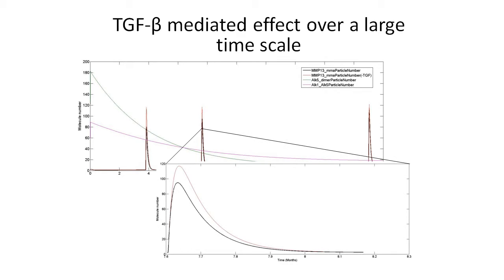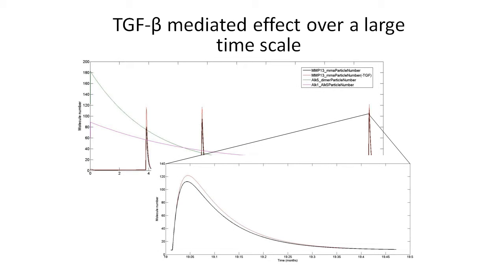If we move to a slightly later time point when ALK1 is only marginally above ALK5, there is still a repressive effect, but it's much less than before, and MMP-13 still leaves the system quicker. But at the final time point, when ALK1 is much higher than ALK5 at around 98 months, the repressive effect is almost entirely gone, and MMP-13 leaves the system at around the same rate as without TGF-beta present.